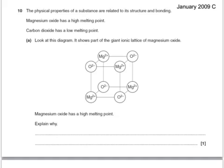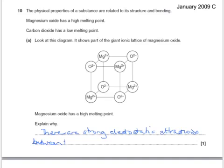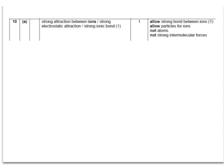And a final question. The physical properties of a substance are related to its structure and bonding. Magnesium oxide has a high melting point; carbon dioxide has a low melting point. Look at the diagram showing part of the giant ionic lattice of magnesium oxide — it has a high melting point, explain why. There are strong electrostatic attractions between the ions, which take a lot of energy to break. The answer requires: strong attraction between the ions, or strong electrostatic attraction, or strong ionic bonds — but not 'strong intermolecular forces', because magnesium oxide isn't a molecule; it's a giant structure.